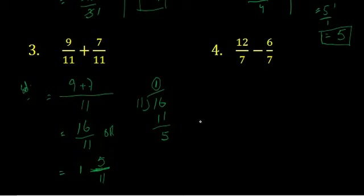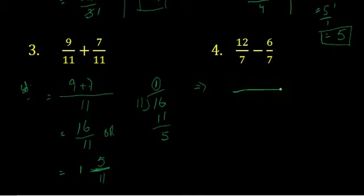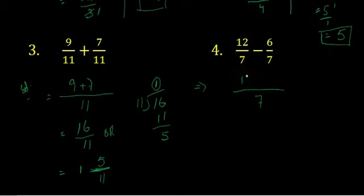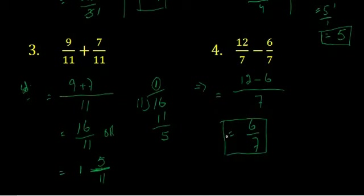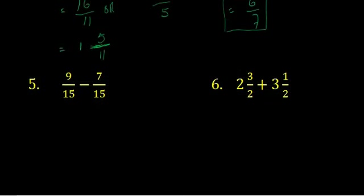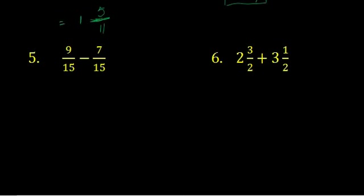Now question number 4 is the same, but the sign is minus, so we subtract the second number from the first. The denominator is the same, so we write it one time. The numerators give 12 minus 6, which becomes 6 upon 7. Since the denominator is greater than the numerator, we leave the answer here. We do not write it as a mixed fraction — quite an easy question.